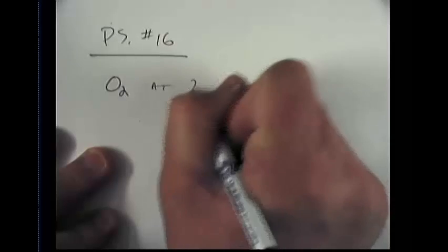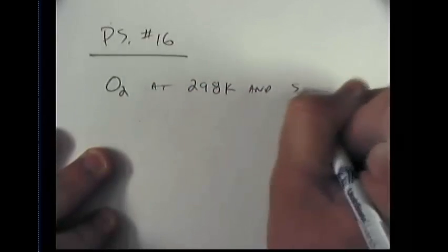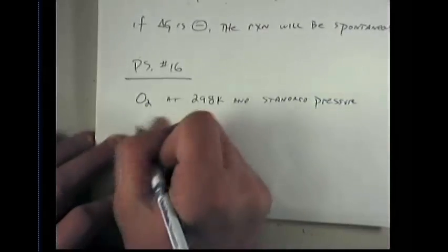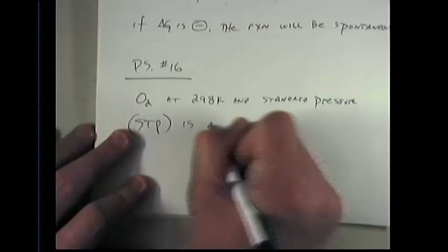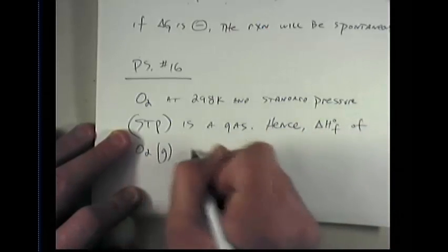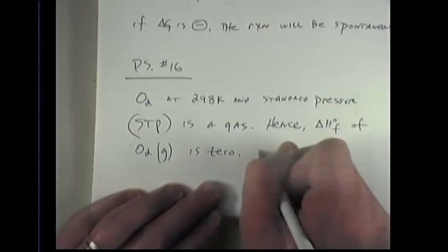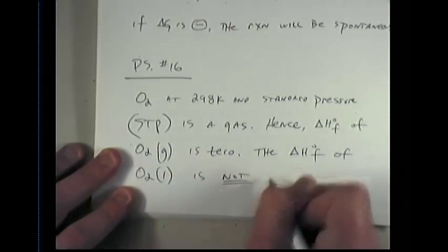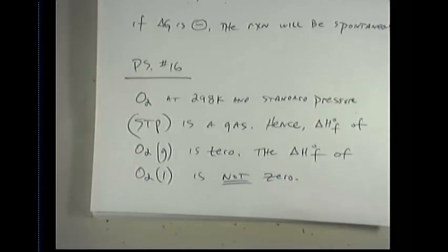Oxygen at 298 Kelvin and standard pressure, in other words, when I say that, what I'm meaning is STP, right? Standard temperature and pressure, is a gas. Hence, the delta H of formation of O2 gas is 0. However, the delta H of formation of O2 liquid is not 0. The reason, once again, is because oxygen at standard temperature and pressure is not a liquid. So, if I were looking for the delta H of formation of oxygen liquid at 298 Kelvin, it would not be 0. This is very, very important.